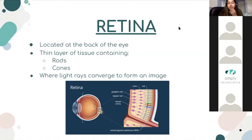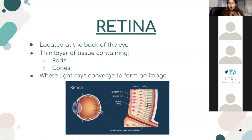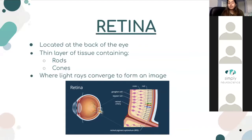The retina is located at the back of the eye. If you imagine light rays going through your eye, they converge on the retina. The retina is a thin layer of tissue and it has two types of cells called rods and cones. One is responsible for seeing color and fine detail, and the other is responsible for black and white and shapes. There are also ganglion cells and bipolar cells, which you'll learn about in biology or neuroscience in high school or university. For now, we're focusing on rods and cones.